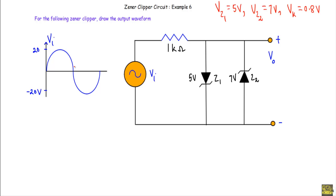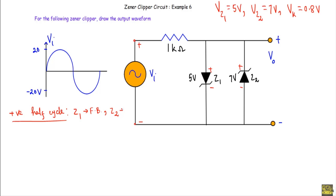For the circuit analysis I will show you how the circuit behaves at different regions of the input voltage. First, consider the positive half cycle of the applied voltage. During the positive half cycle, this terminal will be positive and this terminal will be negative. The positive terminal gets connected with the p-side of Z1 and n-side of Z2, and the negative terminal gets connected with the n-side of Z1 and p-side of Z2. That means during the positive half cycle, the input voltage Vi is trying to put Z1 in forward bias and Z2 in reverse bias.